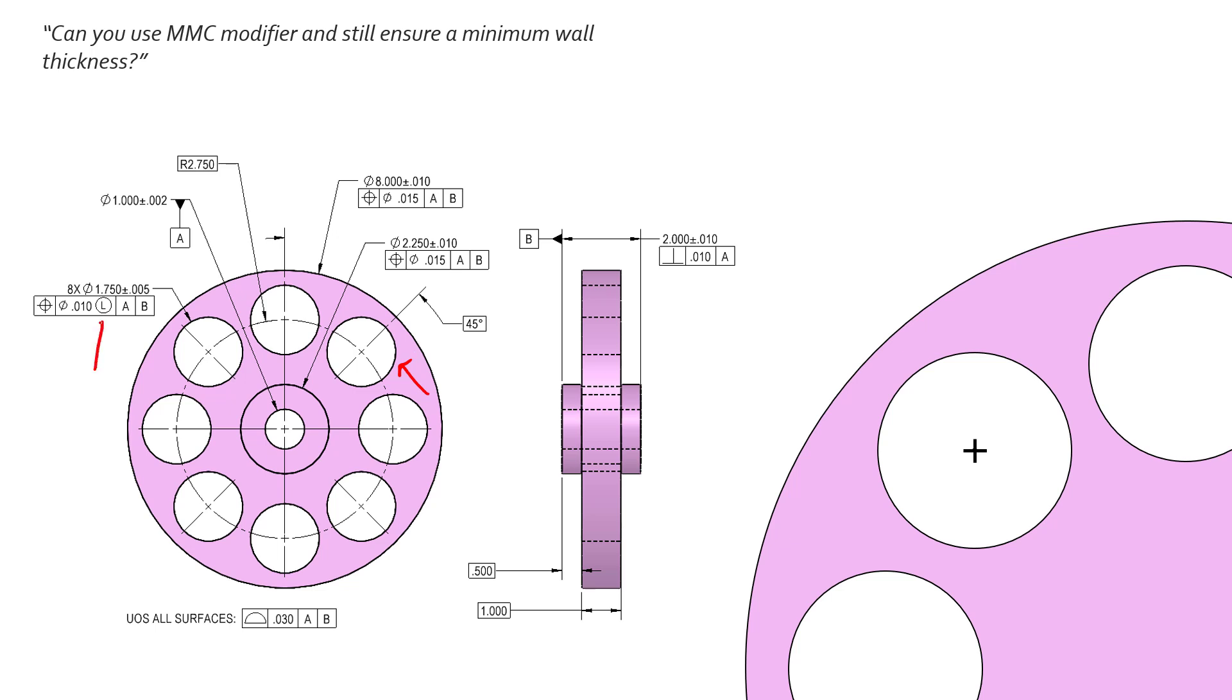We've clearly used the least material condition modifier. So to understand this question, I want to go over how LMC is used. If you're a student in one of our courses, you'll know that we always tell you the LMC modifier is not as common as the MMC modifier because it's only really ever used when you're trying to ensure a minimum wall thickness.